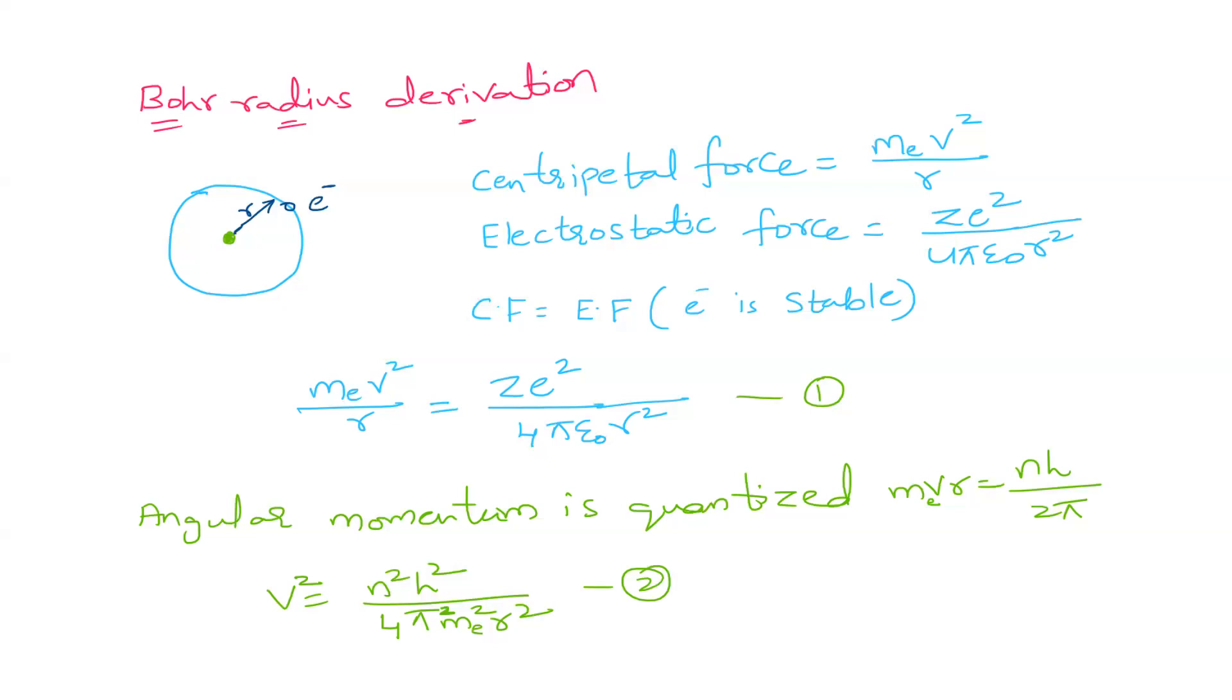So it is Ze into e that will give us Ze². That is how we calculate this electrostatic force. The nucleus may have Ze and it is Ze².